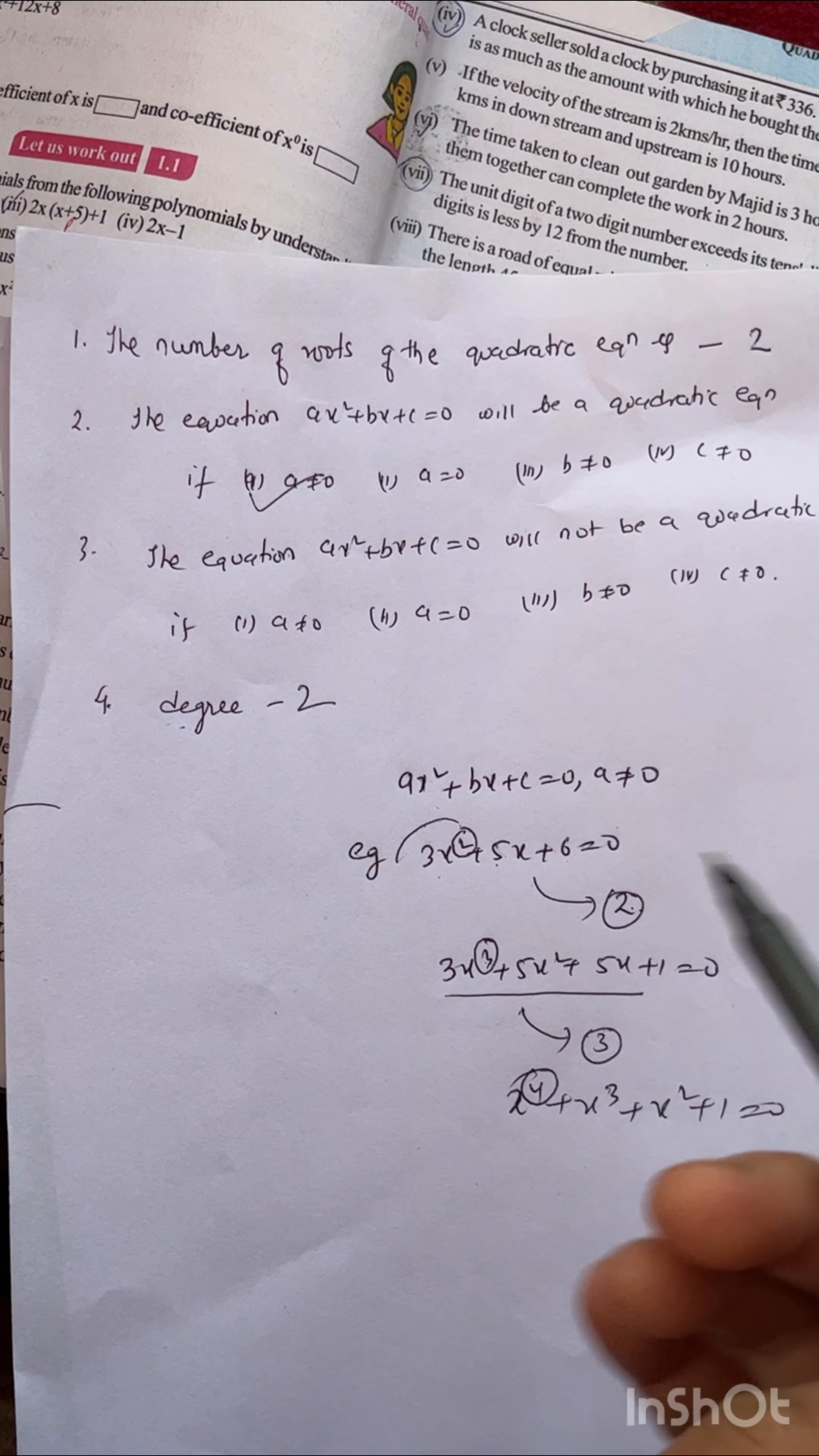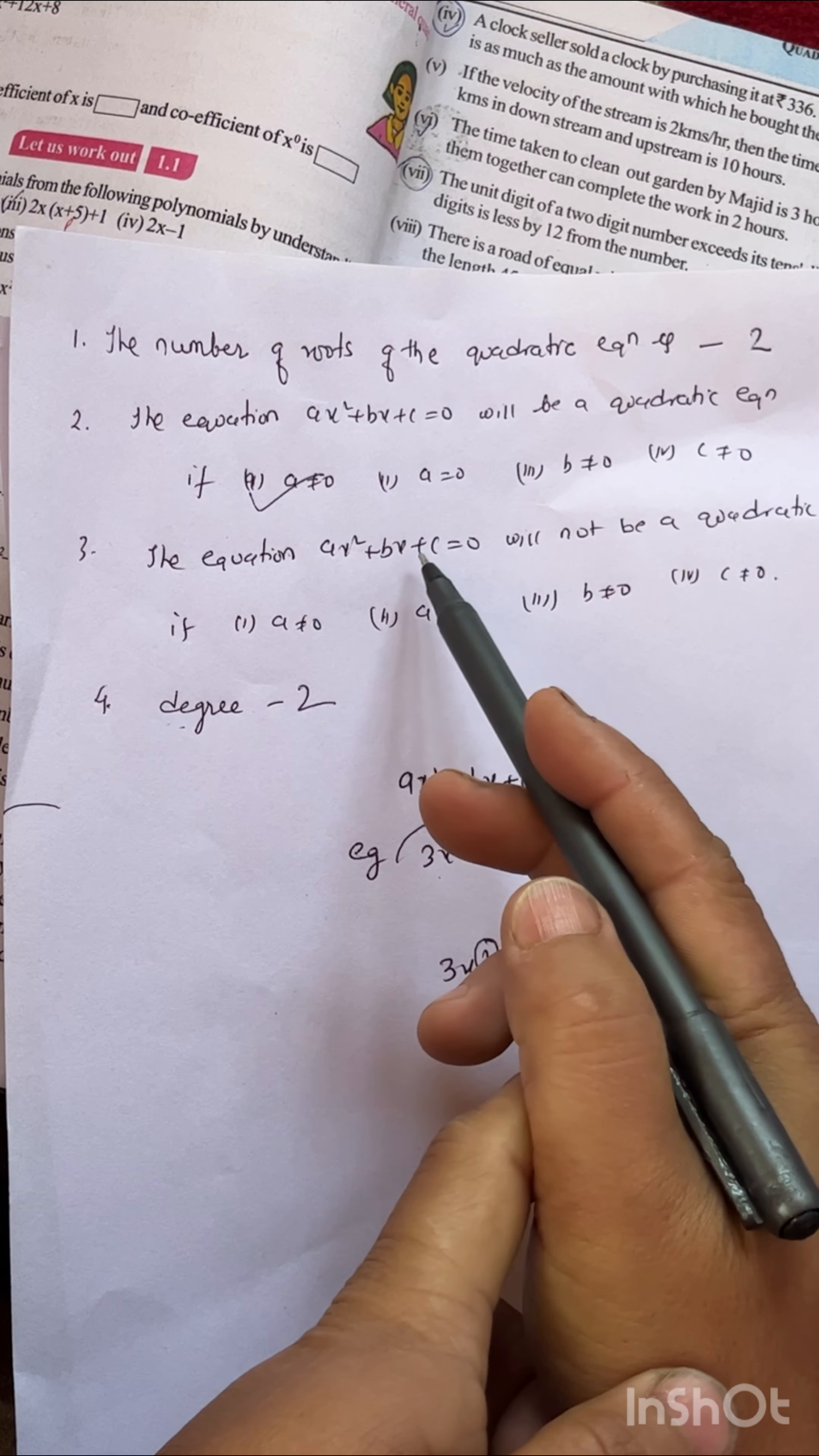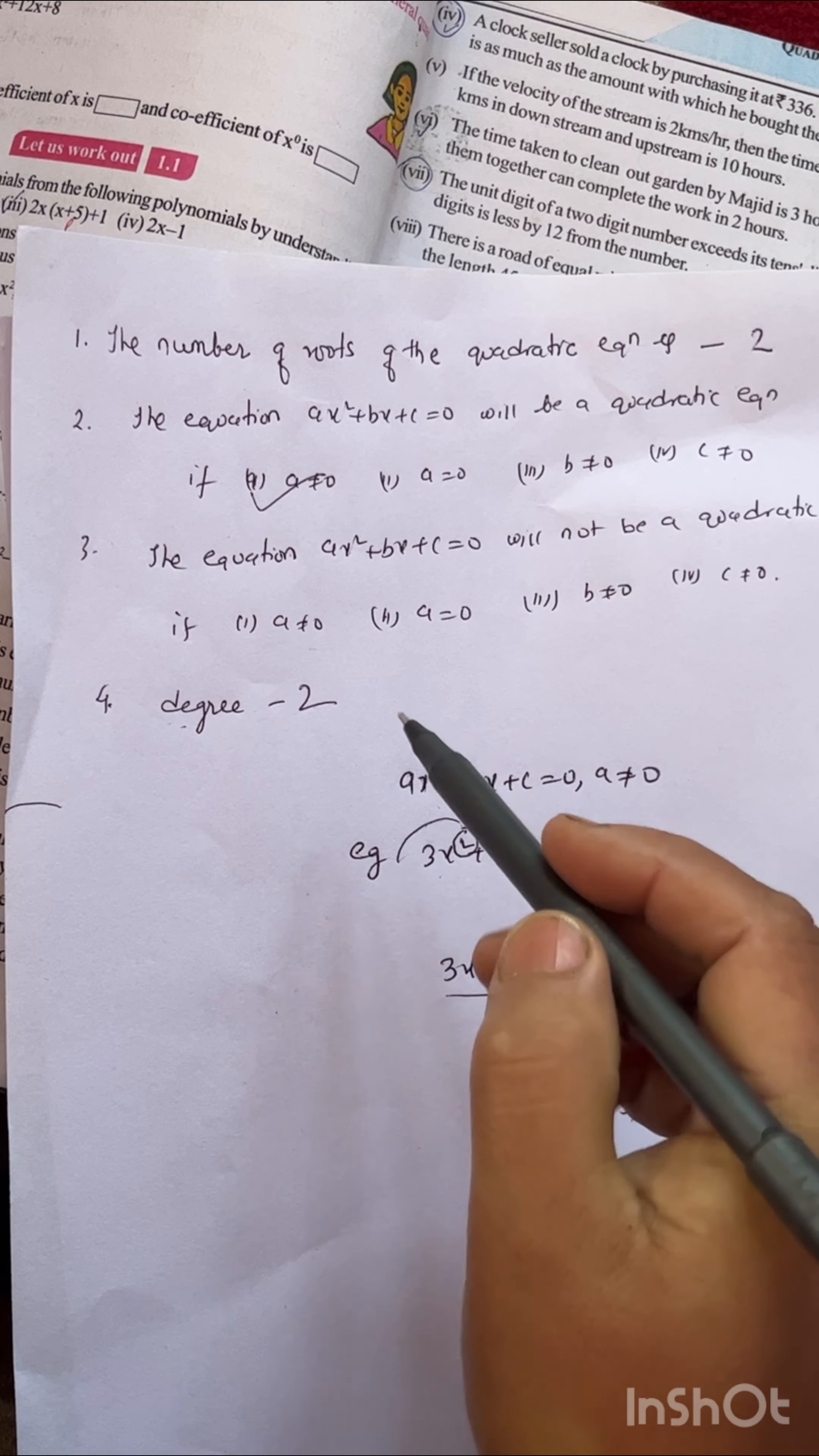The equation ax² + bx + c = 0 will not be a quadratic equation if a = 0.